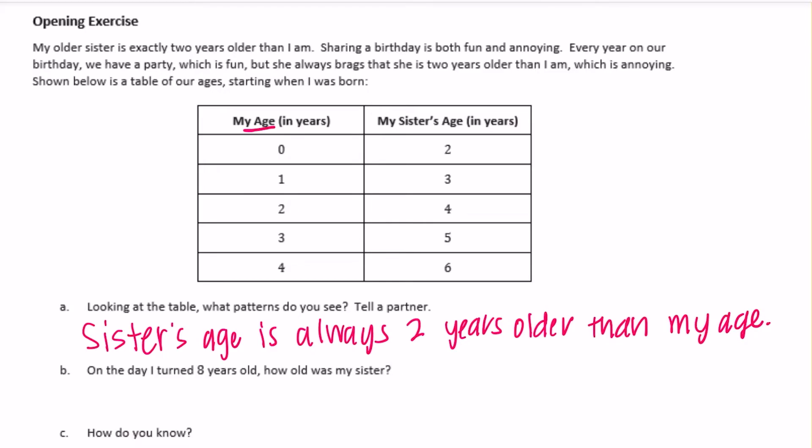On the day I turned 8 years old, how old was my sister? If you were 8, how old was the sister? Well, sister's always two years older, so 8 plus 2 would be 10 years old.